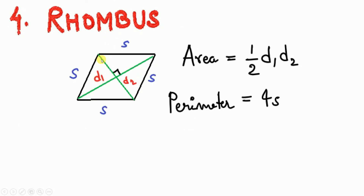Next is the rhombus, which is a special case of a parallelogram where all sides are equal and opposite sides are parallel. The diagonals are unequal but perpendicular to each other. Area = ½ × d₁ × d₂ (half the product of the diagonals). Perimeter = 4 × s, since all four sides are equal.